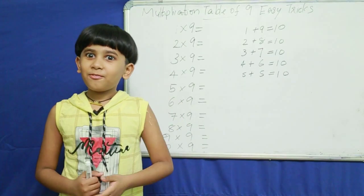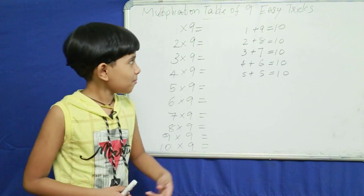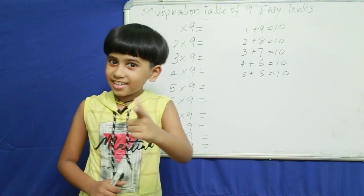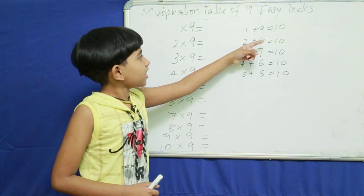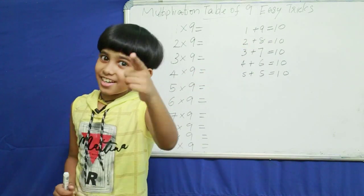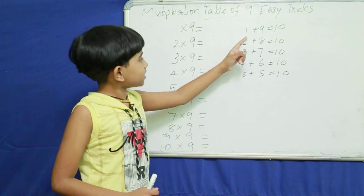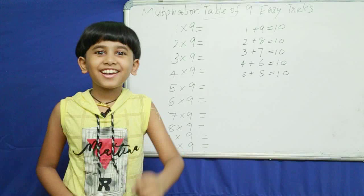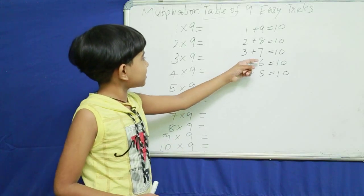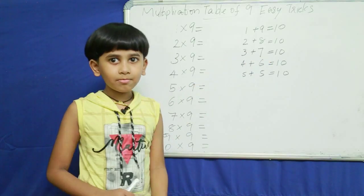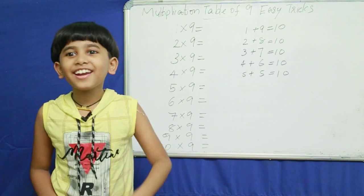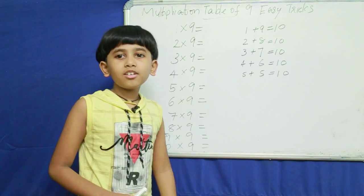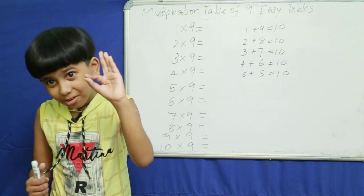Friends, we must study: 1 plus 9 is equal to 10. 2 plus 8 is equal to 10. 3 plus 7 is equal to 10. 4 plus 6 is equal to 10. 5 plus 5 is equal to 10. Very good.